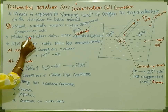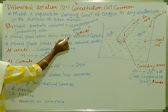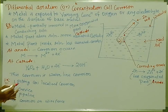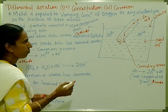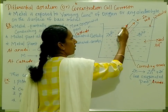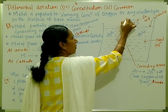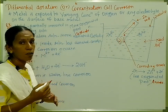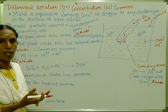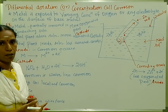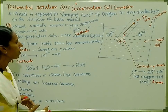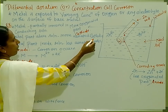The metal part above the solution is more aerated. The metal part above the solution is more aerated, so this part acts as the cathodic part.